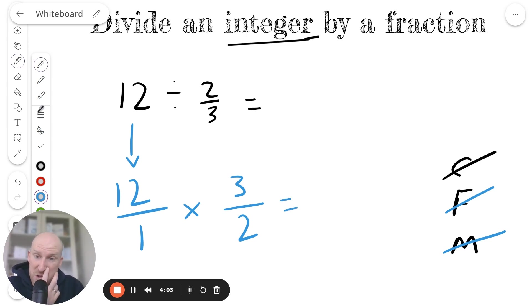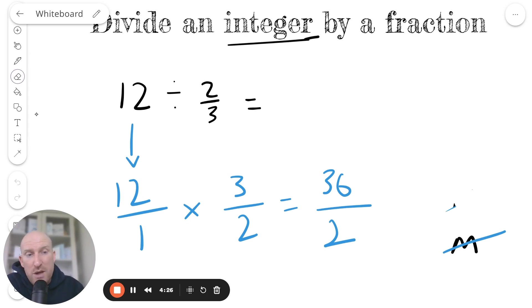That's going to give us 12 times 3, which gives us 36. And then we're going to do 1 times 2, which is 2. So again, there's two things left to do here, actually. I could leave my answer like this and it is technically correct, but it's not in its simplest form, in its lowest form.